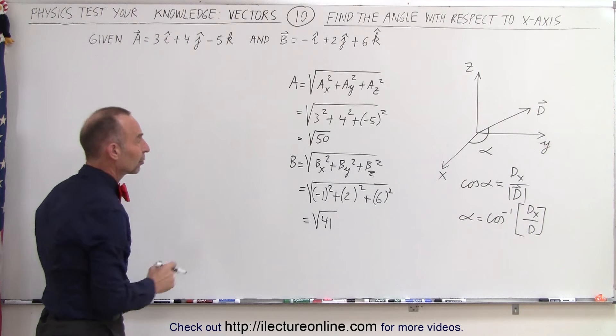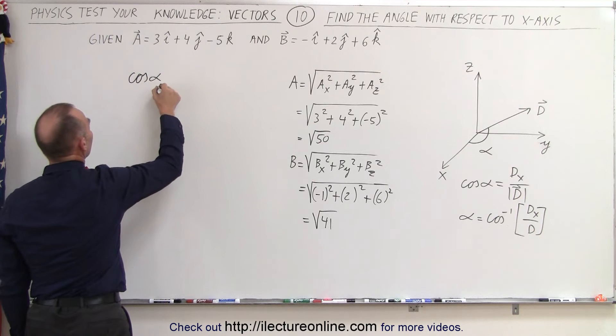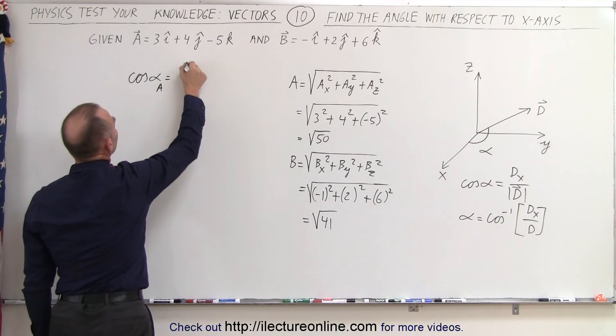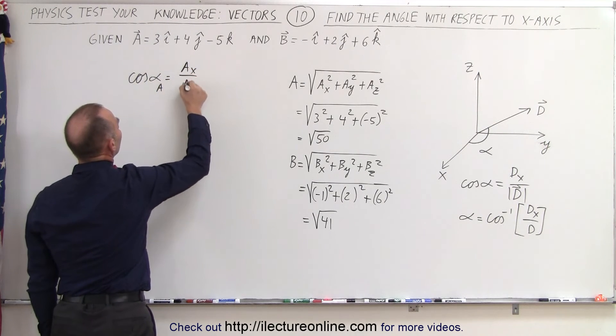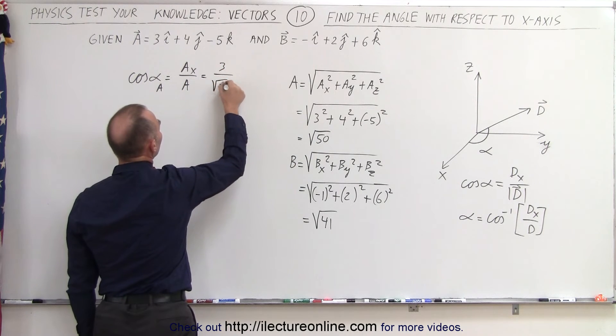Now we find the direction cosine so we can say that the direction cosine for vector a is equal to the x component of a divided by the magnitude. So in this case the x component would be 3 and the magnitude is the square root of 50.